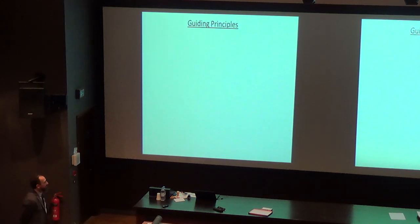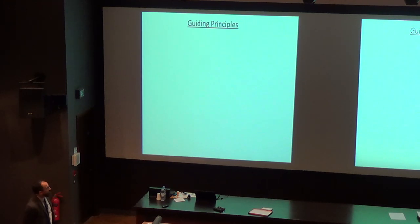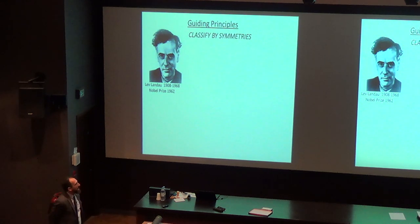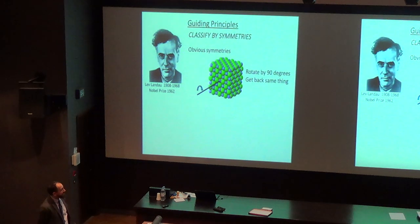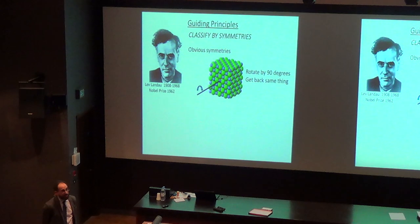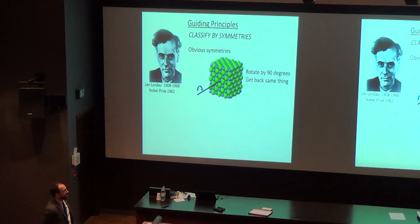We'd like to have some guiding principles as to how we want to classify matter. The dominant guiding principle we've used for the last century is the principle of symmetry, emphasized by the great scientist Lev Landau, who told us that symmetry determines many of the properties of matter. Here's an example of an obvious symmetry: a sodium chloride crystal, which has the property that if you rotate it by 90 degrees, you get back exactly the same thing. Any material with this invariance under 90-degree rotation will have many of the same properties as sodium chloride, so it seems sensible to put them all in the same category.